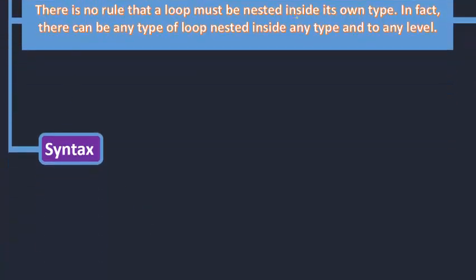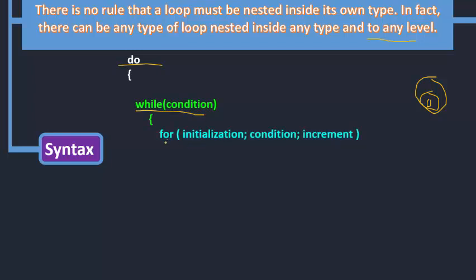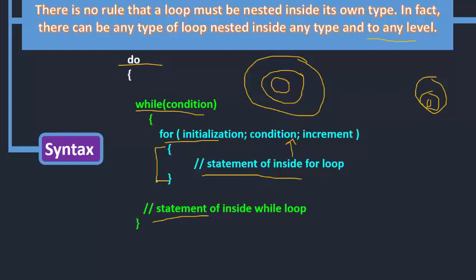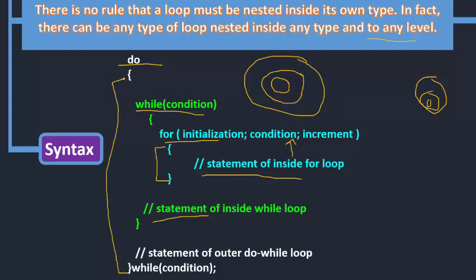There is no rule that a loop must be nested inside its own type — it is not compulsory to nest a do inside a do. In fact, there can be any type of nested loop, and nesting can go to any level — loop inside loop inside loop. For example, within a do loop we can nest a while loop, and within that while loop we can nest a for loop. The innermost statements belong to the for loop, the next statements belong to the while loop, and the outermost statements belong to the do-while loop.